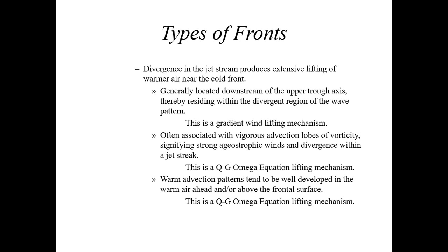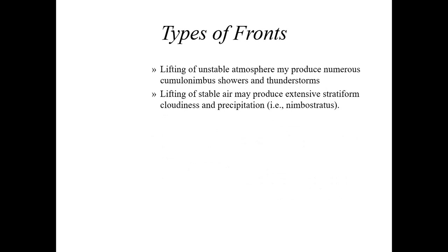Warm air advection patterns tend to be well developed in the warm air ahead of and above the frontal surface. Generally you can get lifting of unstable air which may produce numerous cumulonimbus clouds — those are thunderstorm clouds that produce the lightning we see in the summertime. Showers and thunderstorms are typically associated with those cumulonimbus clouds when a cold front moves into a warmer, unstable air mass.